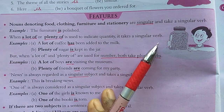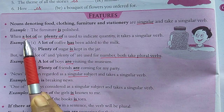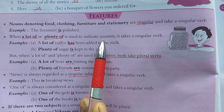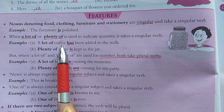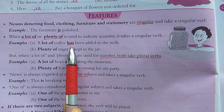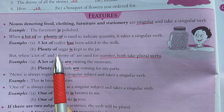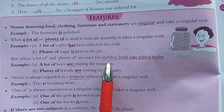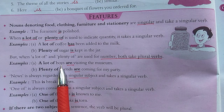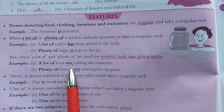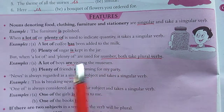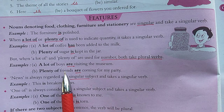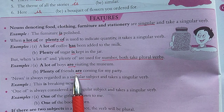When 'a lot of' or 'plenty of' indicates quantity — that is, uncountable items like liquids — it takes a singular verb. For example, 'A lot of coffee' — coffee cannot be counted in numbers, so we use 'has.' 'Plenty of sugar is...' — sugar is again uncountable, so singular verb. However, when 'a lot of' or 'plenty of' is used for countable numbers, we use a plural verb. For example, 'A lot of boys are...' and 'Plenty of friends are...' — boys and friends can be counted, so plural verb.